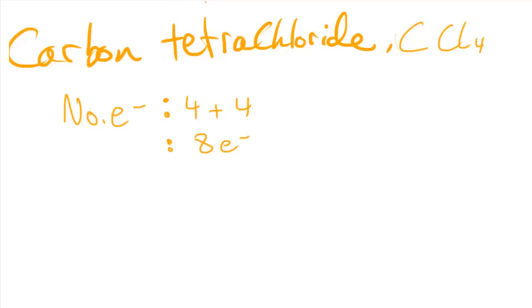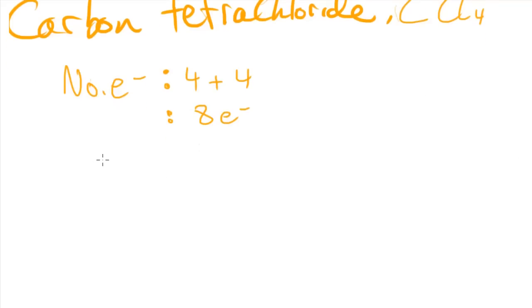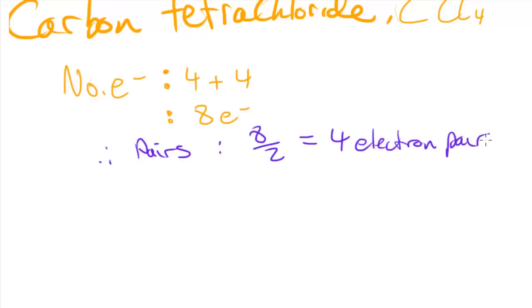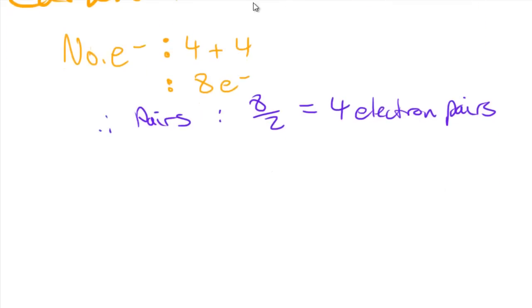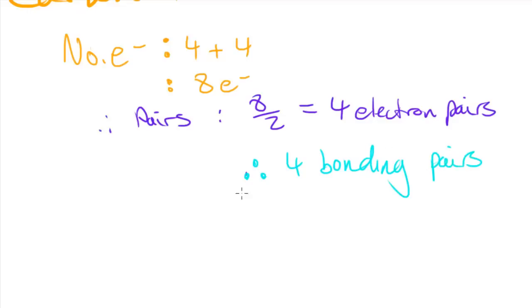Since electrons pair up, we divide 8 by 2 to find the number of pairs: 8 divided by 2 equals 4 electron pairs. Now we need to find the number of bonding pairs. Since there are four chlorines bonded to carbon, there are going to be 4 covalent bonds and therefore 4 bonding pairs. Since there are only 4 electron pairs and all 4 are bonding pairs, there are going to be no lone pairs.